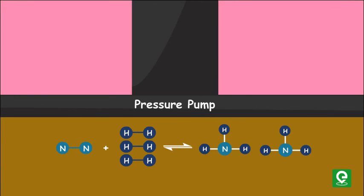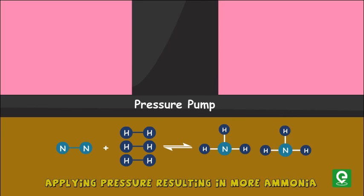For example, in the process of creation of ammonia gas, one molecule of nitrogen gas combines with three molecules of hydrogen gas to form two molecules of ammonia. Here, number of molecules of reactants are four, while number of product molecules are two. Thus, if you apply pressure, system will create more ammonia, reducing the number of molecules.